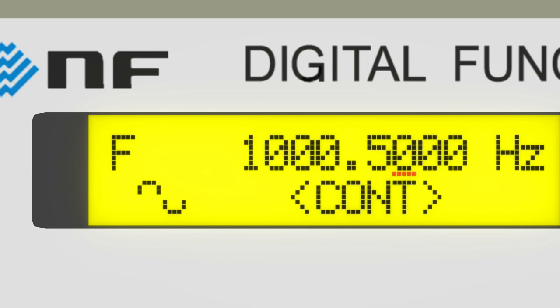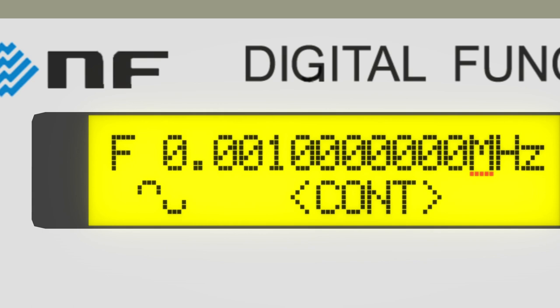You can change the unit of measure by moving the cursor further to the right of the value and turning the Modify dial. Note, however, that this will only change the display unit, not the actual frequency. For example, 1000 Hz changes to 1 kHz, 0.001 MHz, and 1,000,000 mHz.